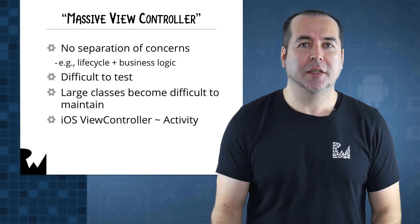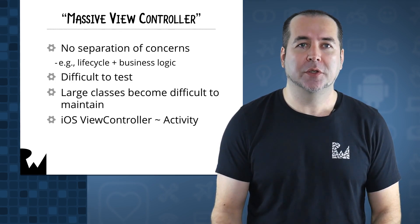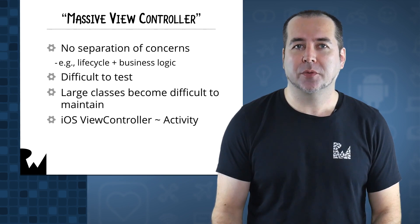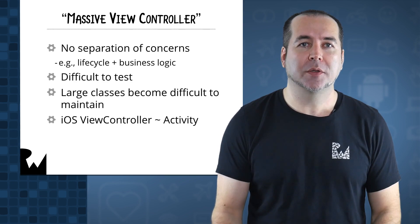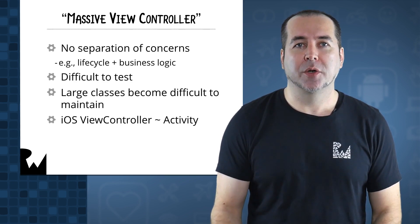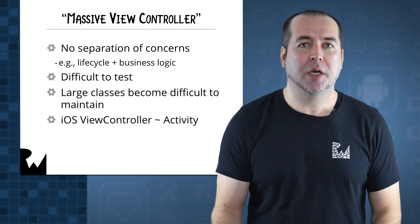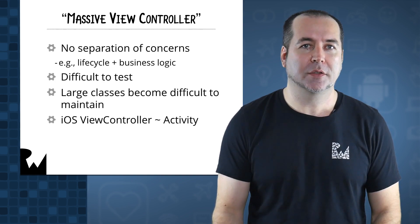Adding in non-lifecycle business logic to an activity breaks separation of concerns. It also becomes difficult to unit test your business logic, since you typically must run activity tests on a device or emulator, whereas you'd prefer to run unit tests outside of a device or emulator and solely on the JVM. Your code also becomes difficult to maintain, since it's all piled into a small number of large activity or fragment classes.